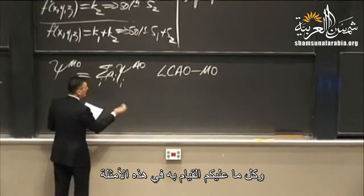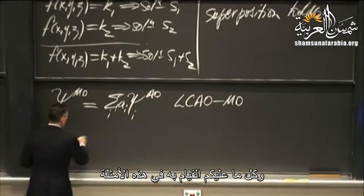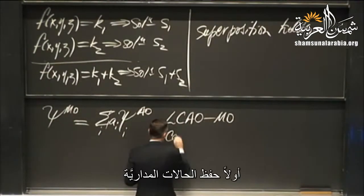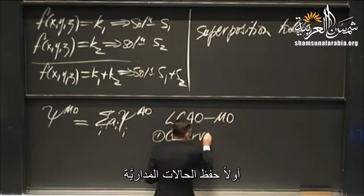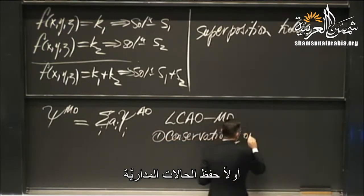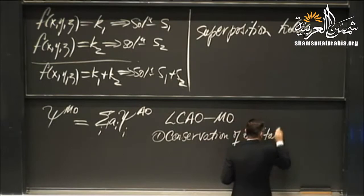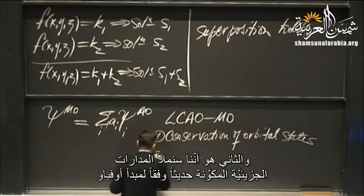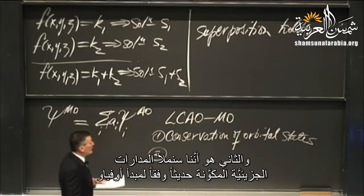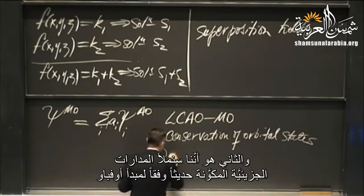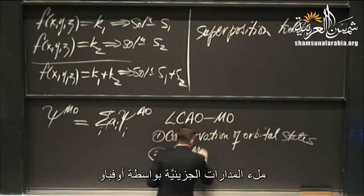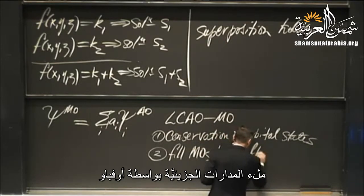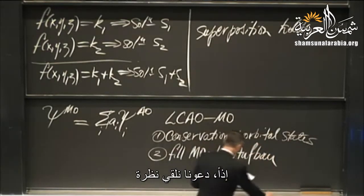To run the LCAO-MO examples we use two ideas: first, conservation of orbital states; second, fill the newly created molecular orbitals according to the Aufbau principle. With those tools, we're in good shape.